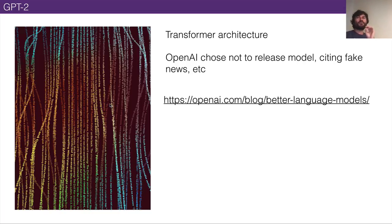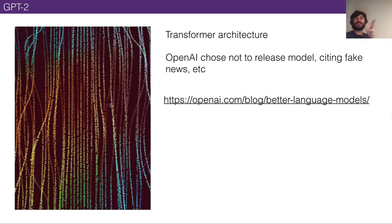They decided this was too dangerous and chose not to release the full model when they wrote the blog post, citing malicious uses — people could use it to create fake news or impersonate people. They released a smaller version first, then later a medium-sized version. They assembled 40 gigabytes of internet text and trained a really gigantic neural network on it. Two limitations: assembling the dataset, and it requires a ton of computation — estimated around $50,000 to train one of these models.